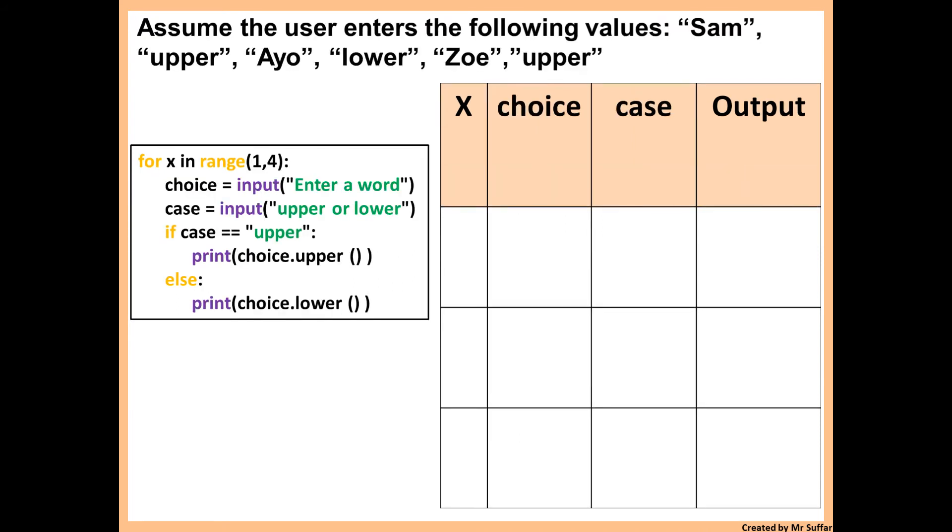Here we have another example. So it says assume the user enters the following values: Sam upper, Ayo lower, Zoe upper. So we start with the code here. For x in range 1, 4. So obviously x will start with 1. Then it says choice. Choice is equal to input. Enter a word.